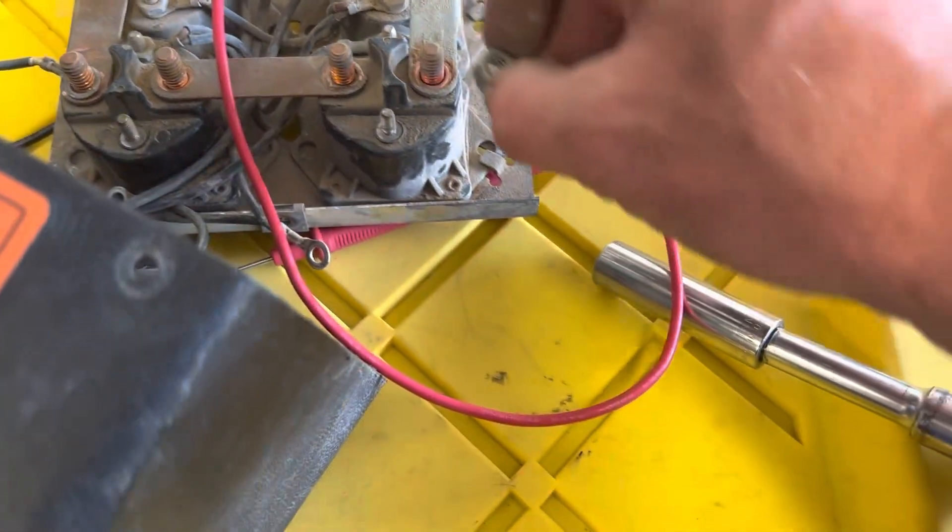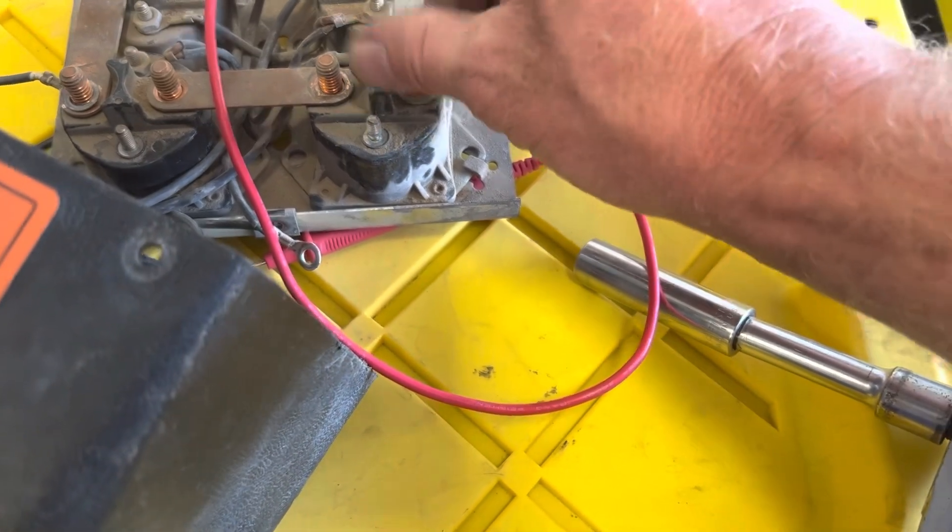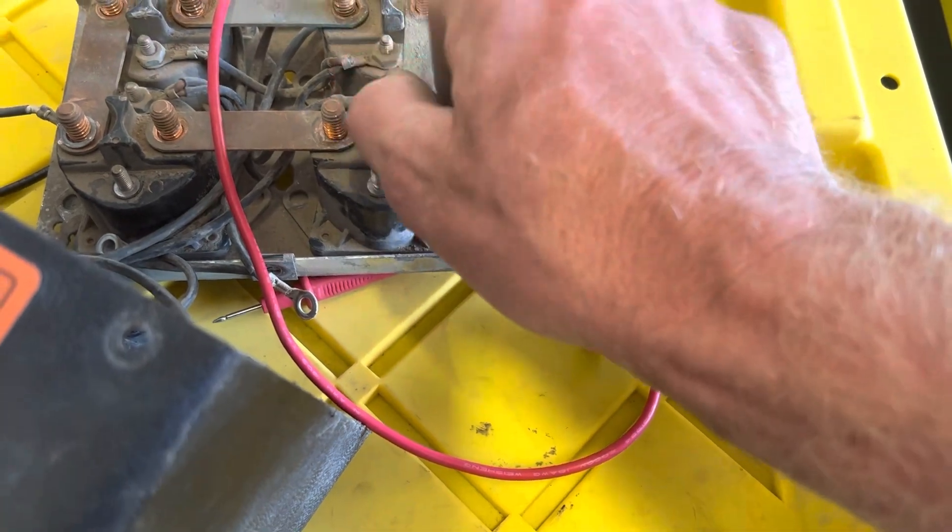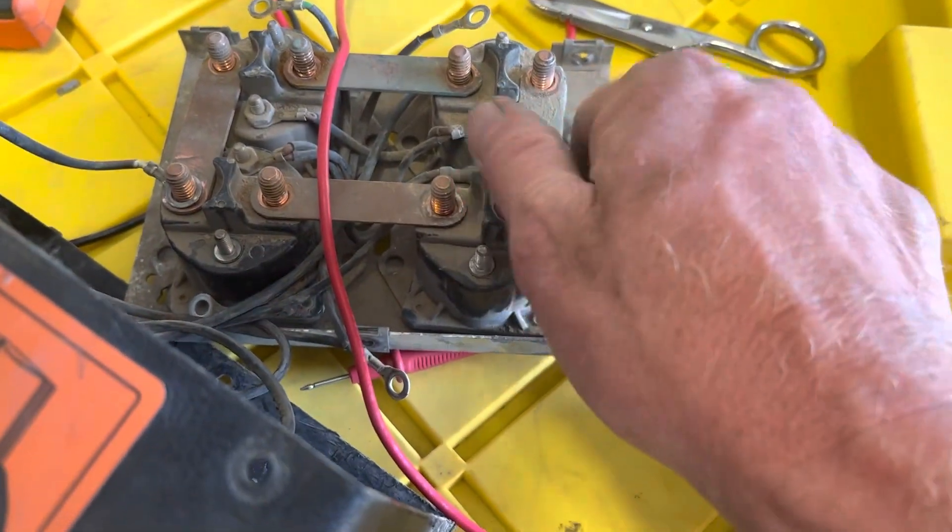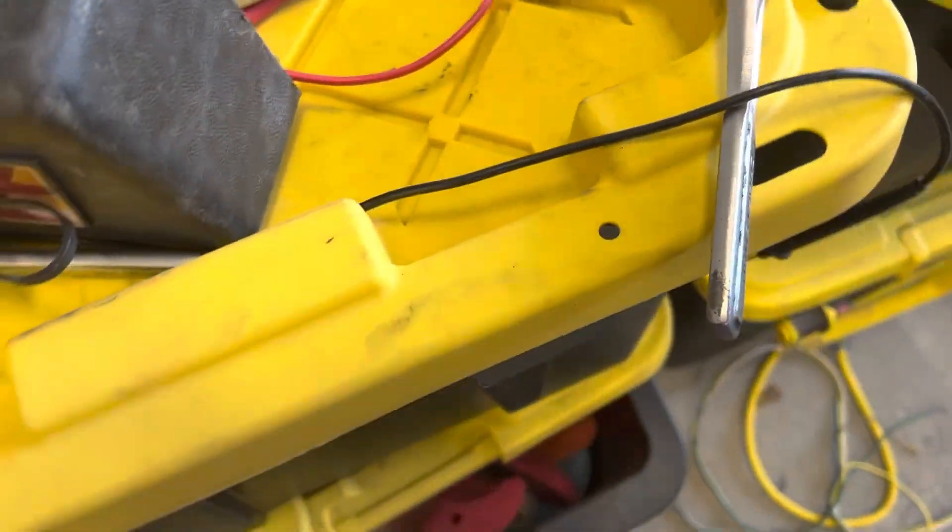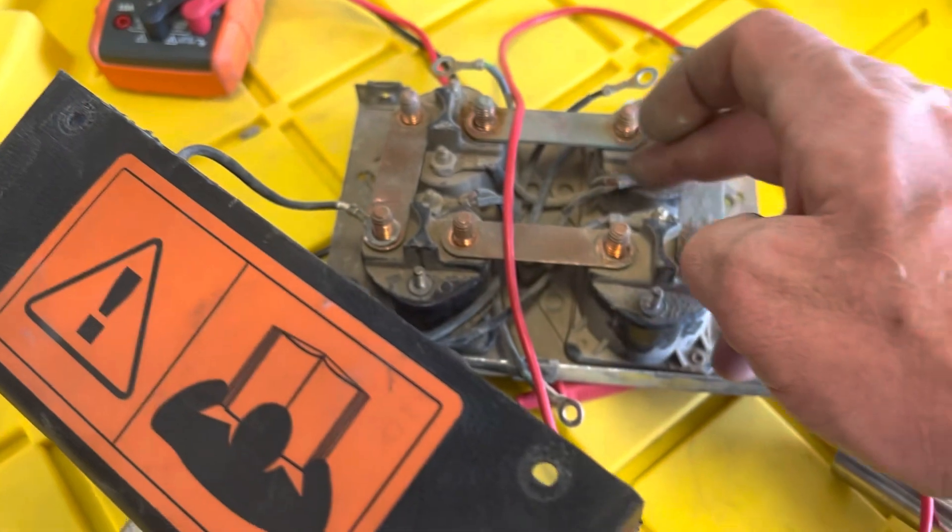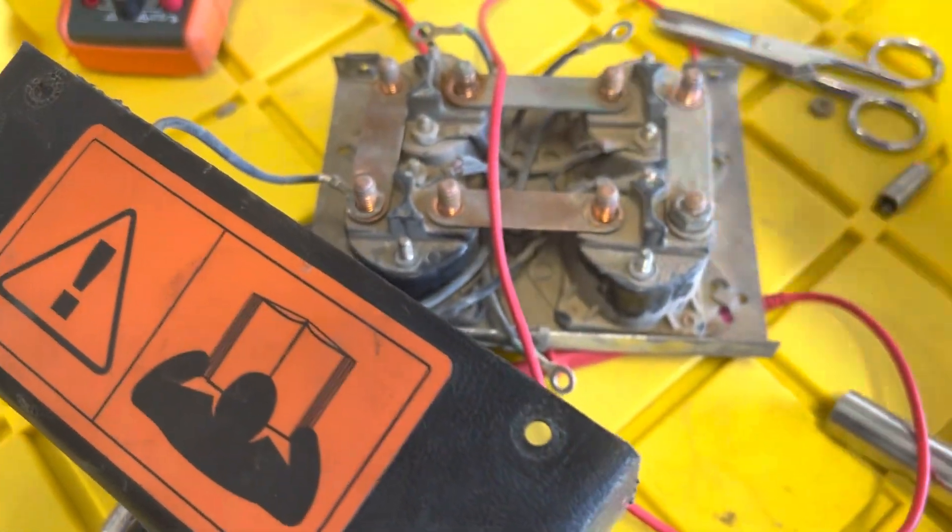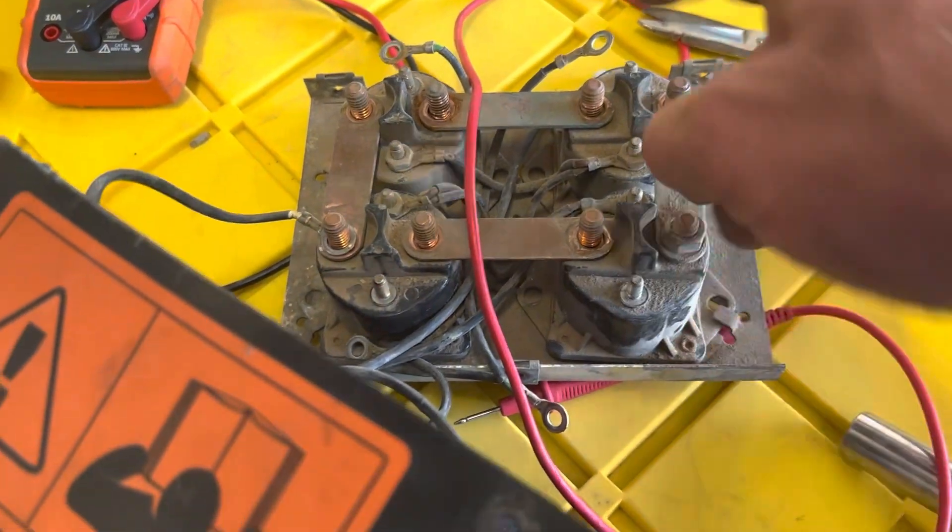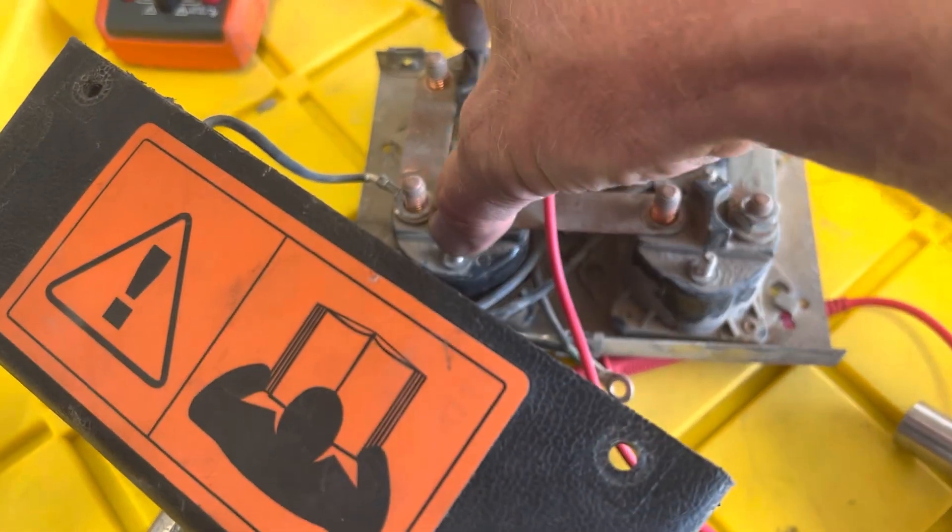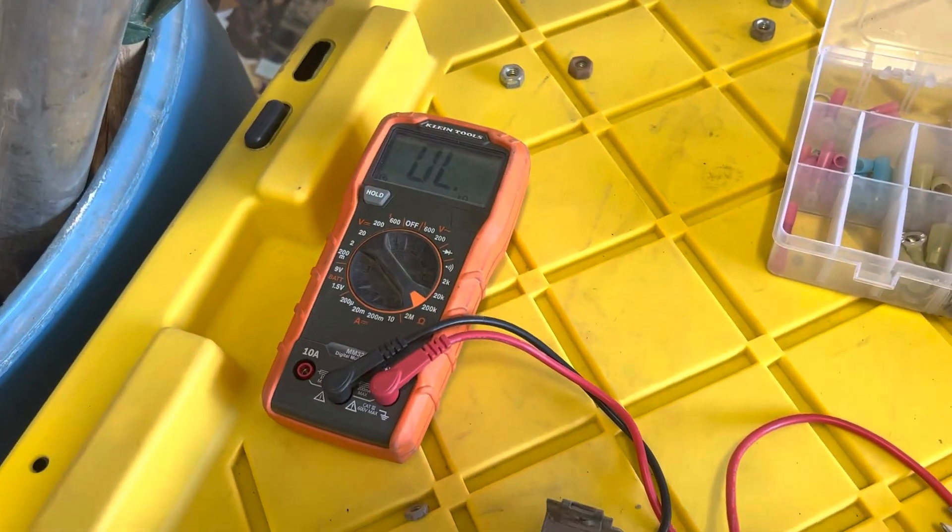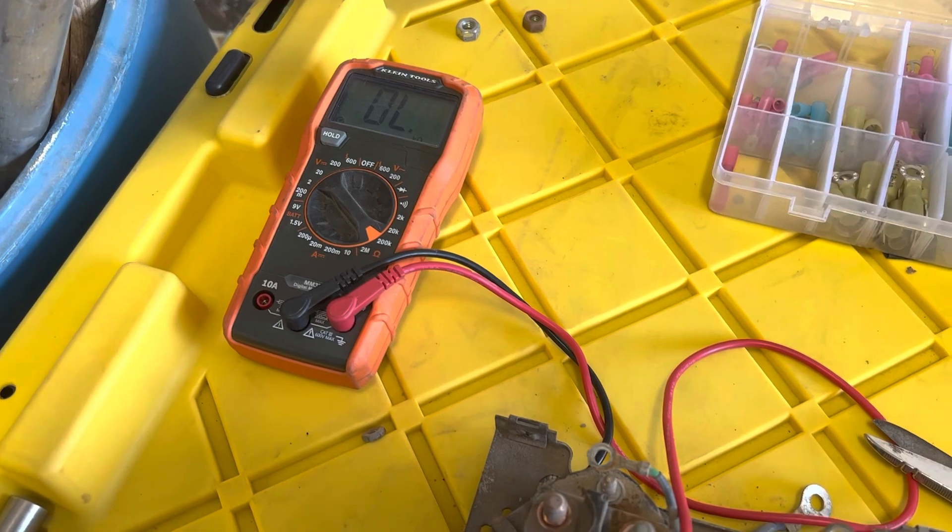The problem ultimately ended up being that this solenoid is bad. I'm gonna order another one of those and get it replaced and put it back together. But that's how you test it. You have to pull all of that out. Ran some wires over to my battery. I put the negative on the inside and left all four of those connected. Put the positive on the outside of all of them. Tested them. These three closed the circuit. This one did not close the circuit. Stayed as an open load which tells me it's a bad solenoid. And that's why my winch wouldn't go in.